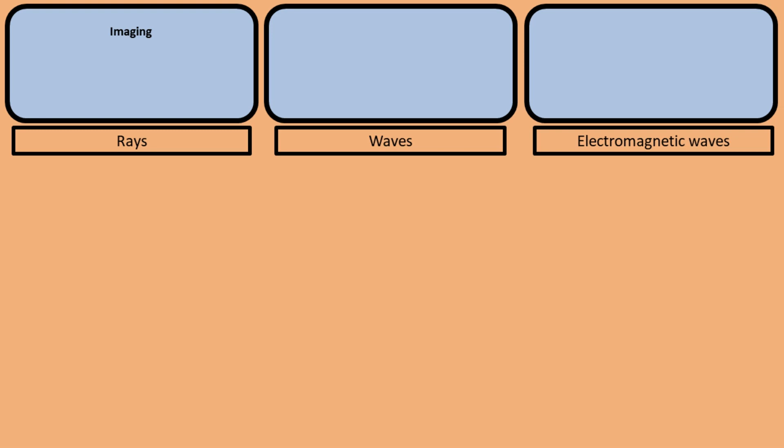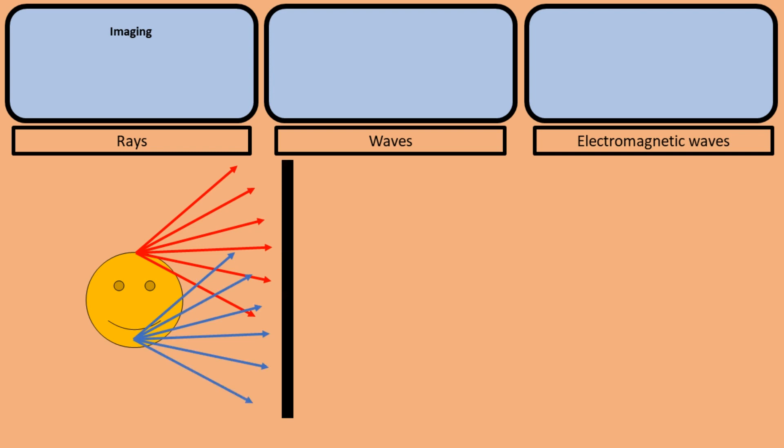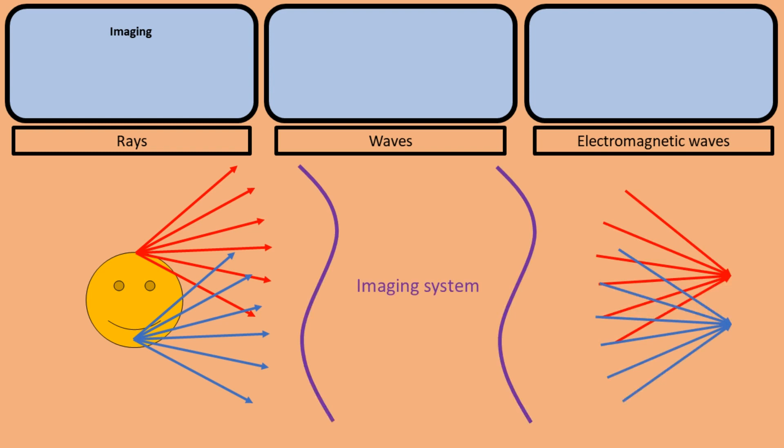According to the ray model, each object point scatters rays of light in all directions. If we were to collect these rays directly on a screen, the object would look very blurred and hardly recognizable. What we need is an imaging system, and the purpose of the imaging system is to make sure that all the rays that came from a single point end up in a single point as well. If we then collect these rays on a screen, we obtain a clear image of the object.